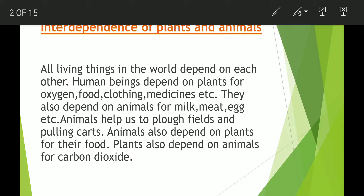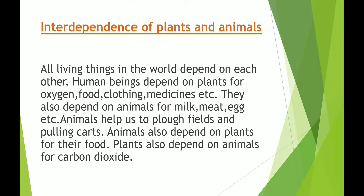Plants and animals are interdependent on each other. All living things in the world depend on each other in some way or the other. For example, human beings depend on plants for oxygen, food, clothing, medicines, etc. They also depend on animals for milk, meat, egg, etc. Animals help to plow fields and pull carts. Animals are also dependent on plants for their food, and plants depend on human beings and animals for carbon dioxide.